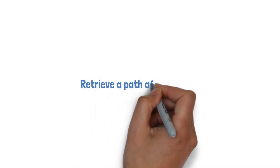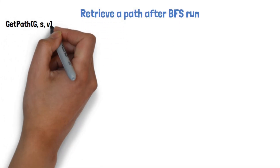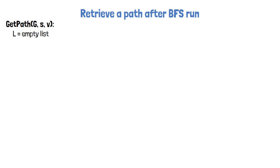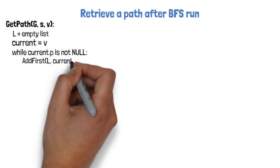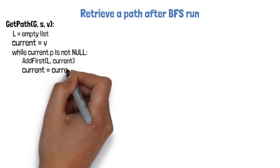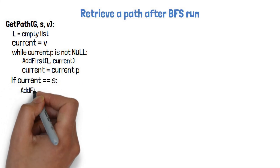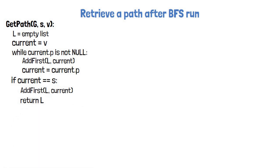Lastly, let's see how to retrieve a path between vertex S and another vertex after running BFS. We write pseudocode for getting such a path. We start with an empty list L that will represent the path, and set the current vertex to the input V. As long as the current vertex has a parent, we add it to the front of the list and set current to be its parent. Eventually, when the parent is null, we check if the current vertex is S. If so, we add S to the front and return the list representing the path. If the vertex we ended up with is not S, we return null to specify there is no such path.